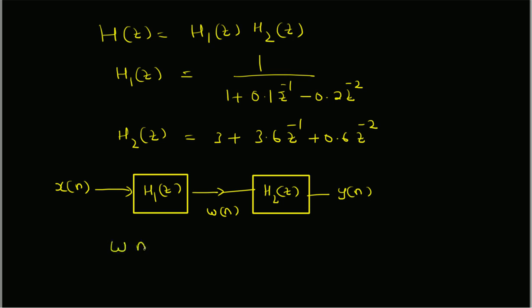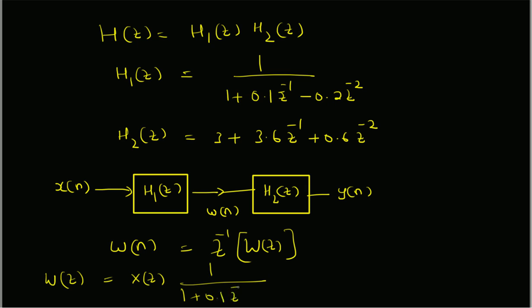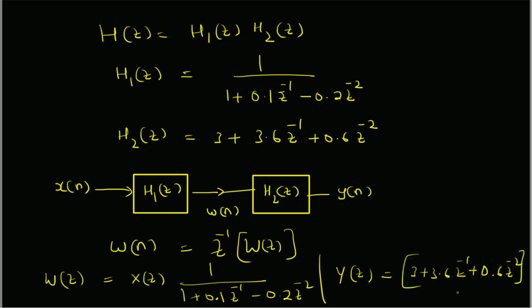The system can be depicted as: x(n) goes through H1(z) to produce the intermediate signal w(n), which then goes through H2(z) to produce the output y(n). The relation between W(z) and X(z) is: W(z) · (1 + 0.1·z⁻¹ - 0.2·z⁻²) = X(z). We can write the time-domain relationship between w(n) and x(n) from this.